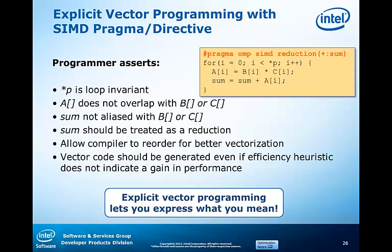For example, by using the pound-pragma OMP SIMD reduction on the plus colon sum clause, we are asserting that the loop is safe to vectorize and should be vectorized, which means that star P will be considered loop invariant by the compiler. A is not aliased with B, C, or sum. Sum is not aliased with B or C and is in fact a reduction with the plus operator. This also means that the plus operator will be treated as an associative and commutative operation, meaning that the compiler can reorder for better vectorization. All this taken together means that vectorized code is generated even if compiler efficiency heuristics do not indicate a gain.